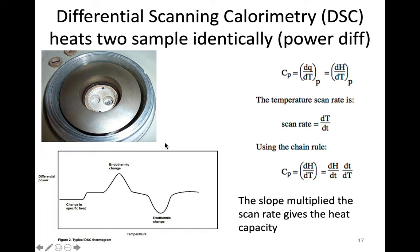This power difference allows us to look at heat capacity. The differential power is tied to how we define heat capacity at constant pressure. If we have a scan rate — the change in temperature with time — we can apply the chain rule and see that we are effectively looking at the heat capacity when we look at the change in enthalpy with time divided by the scan rate. So the slope of this curve multiplied by the scan rate gives us heat capacity, and the slope is telling us about heat capacity.